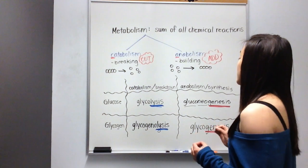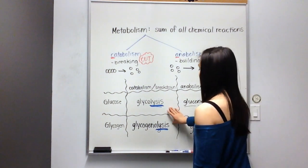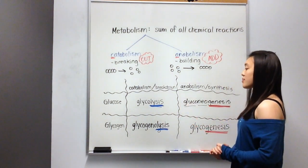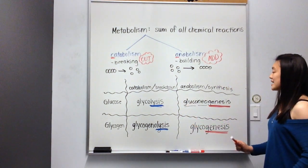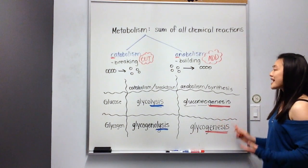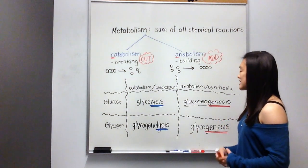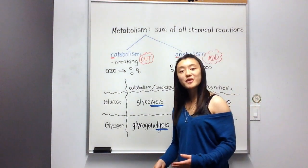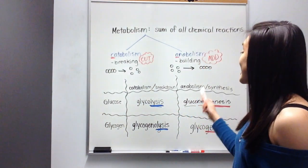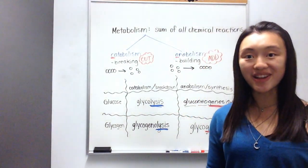Again, keep in mind that whenever you see lysis, it's always breakdown, either the breakdown of glucose or the breakdown of glycogen. On the other hand, whenever you see the suffix genesis, you know that it has to do with synthesis, production, or formation, whether that's forming a molecule of glucose or whether that's forming glycogen. So these suffixes can really tell you a lot.